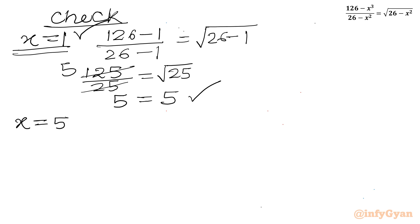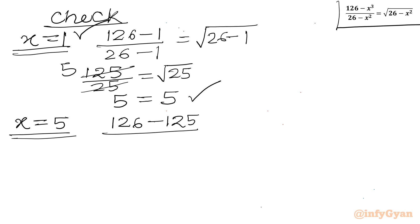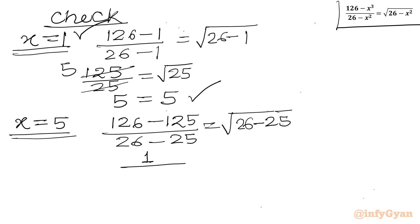Checking x equals 5: LHS is (126 minus 125) over (26 minus 25) equals 1 over 1 equals 1, and RHS is √(26 minus 25) equals √1 equals 1. LHS equals RHS, so x equals 5 is also a true solution. Our final integer solutions for this radical equation are x equals 1 and x equals 5. I hope you liked this video — thank you for watching, and don't forget to like, share, and subscribe. Good luck!